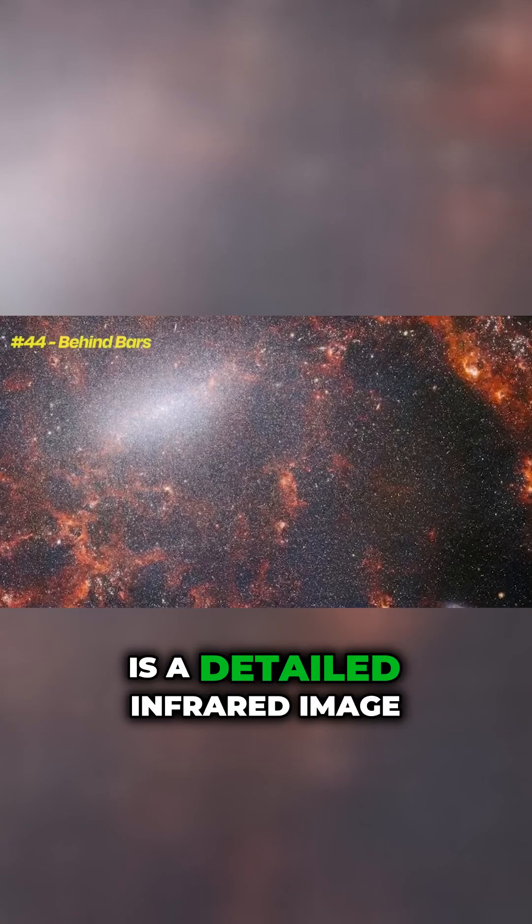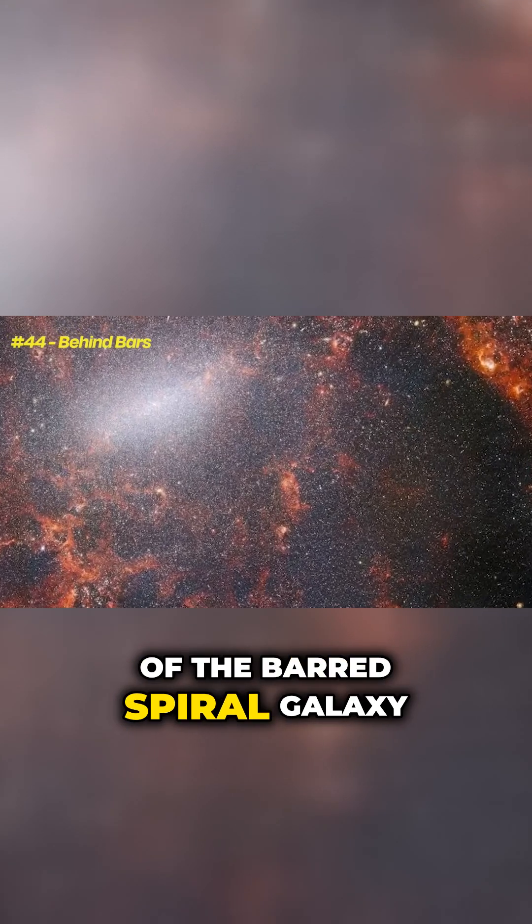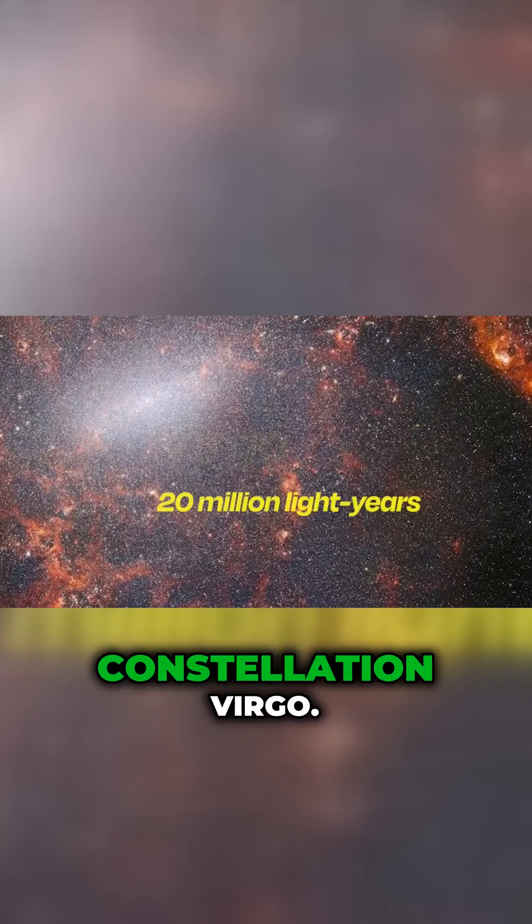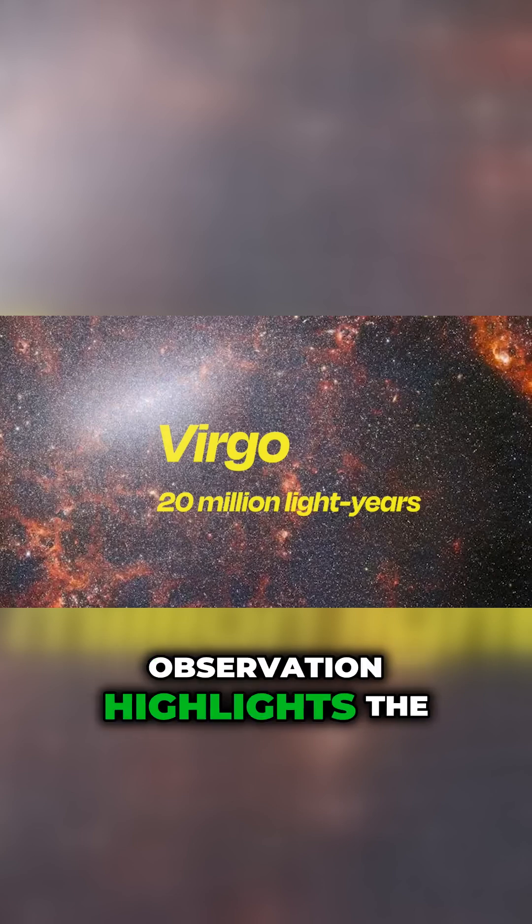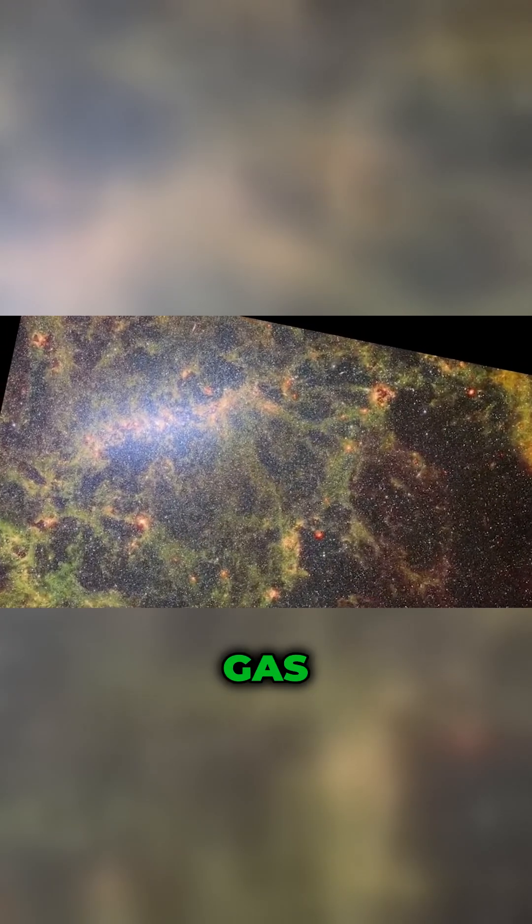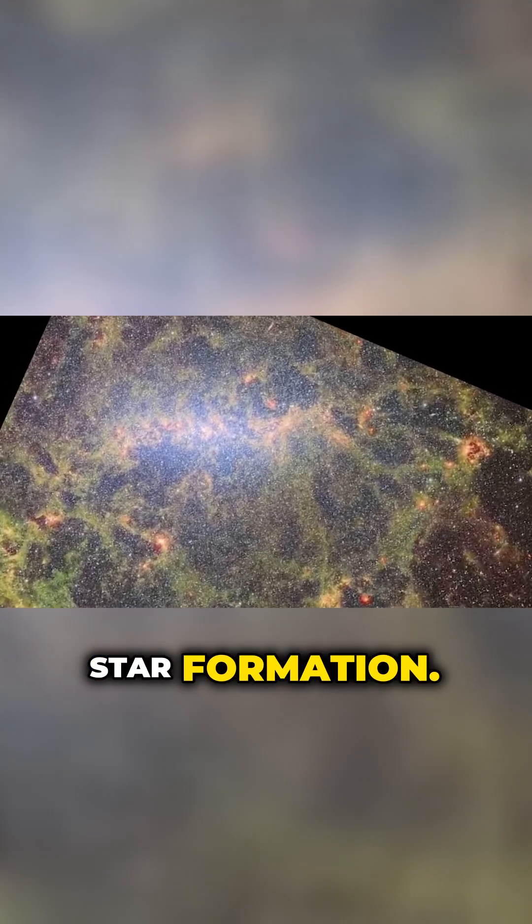This is a detailed infrared image of the barred spiral galaxy located approximately 20 million light-years away in the constellation Virgo. This observation highlights the galaxy's central bar structure composed of stars funneling gas towards its core, thereby fueling star formation.